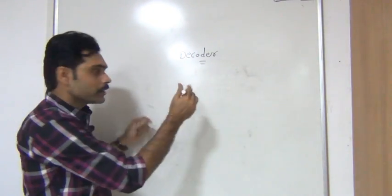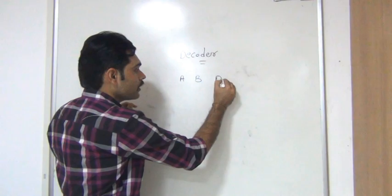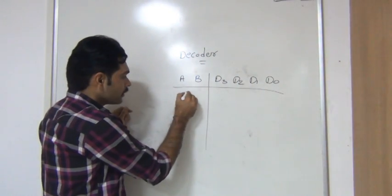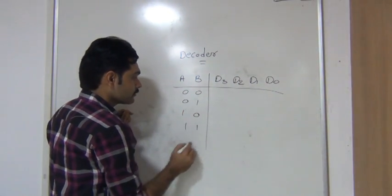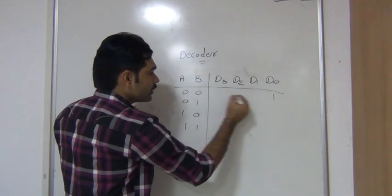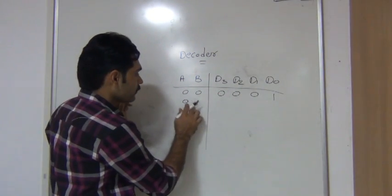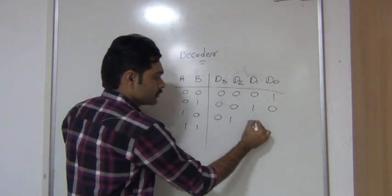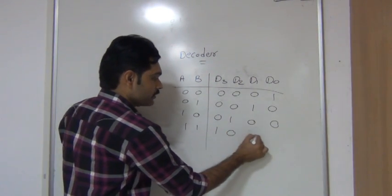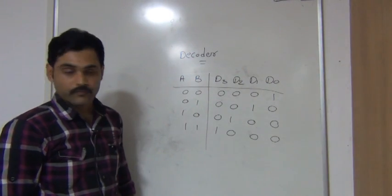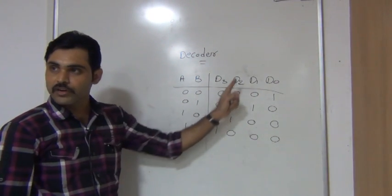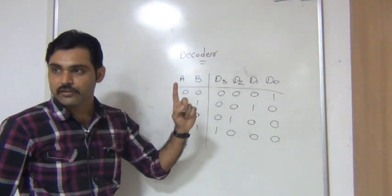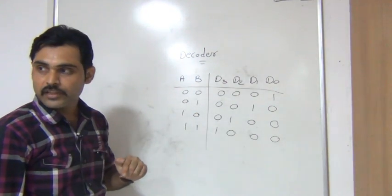If you take this in the form of a table, with 2 inputs A and B and 4 outputs, at the input side you can apply 4 combinations. If 00 is applied, D0 will be 1 and the remaining are 0. When 01 is applied, D1 will be active. When 10 is applied, only D2 will be active. When 11 is applied, D3 will be active. Depending on the particular input value, only one output line will be active and the remaining will be deactivated. This is the truth table of the 2-to-4 decoder. Now we will construct the same in the form of a logic circuit.